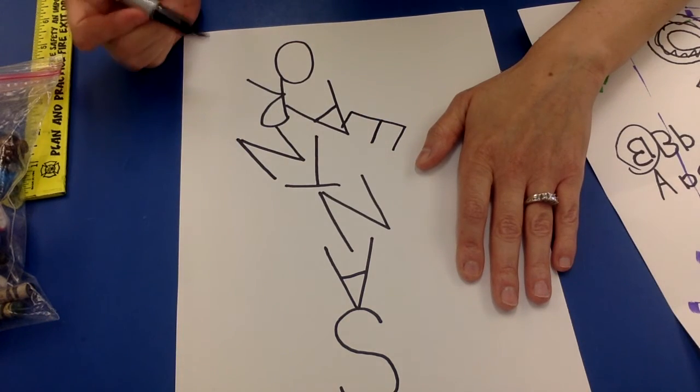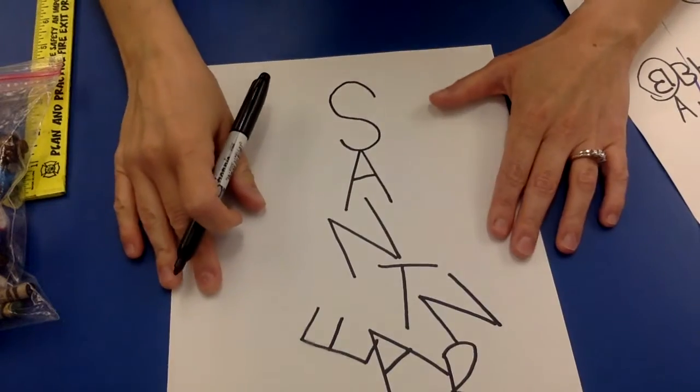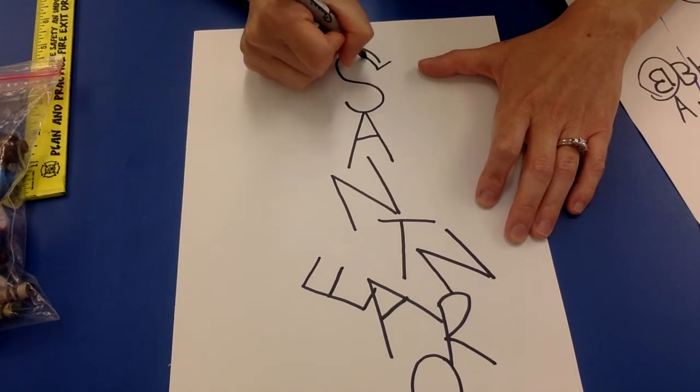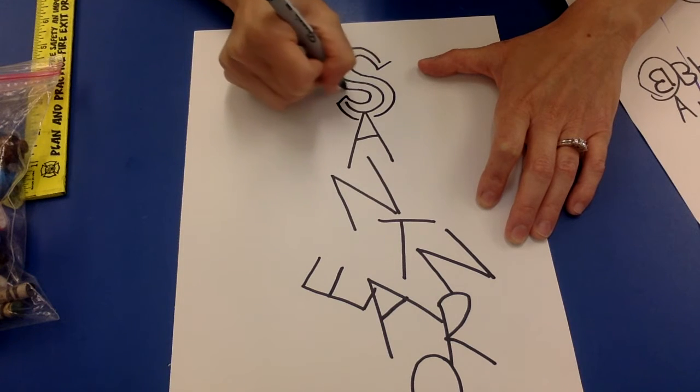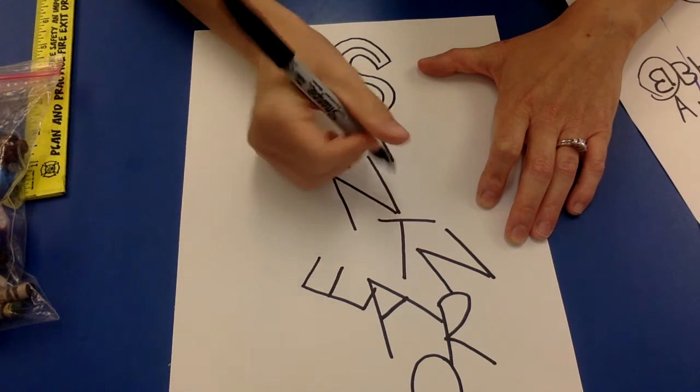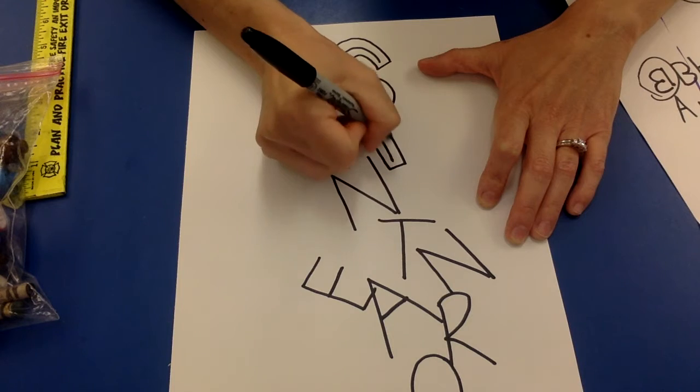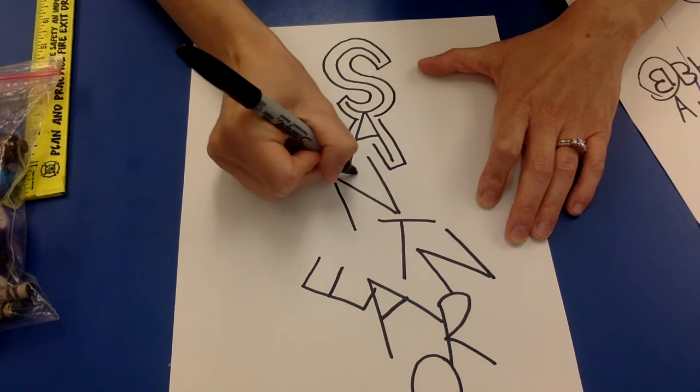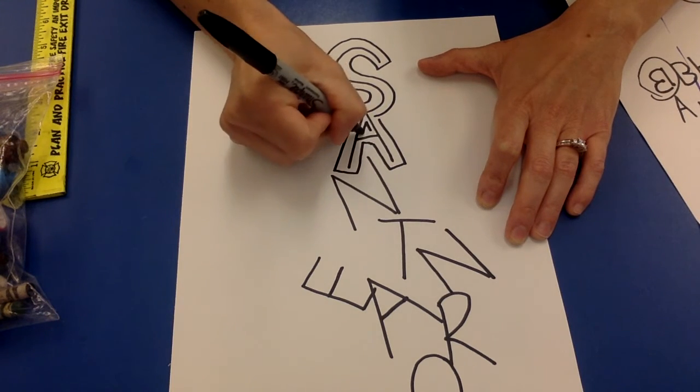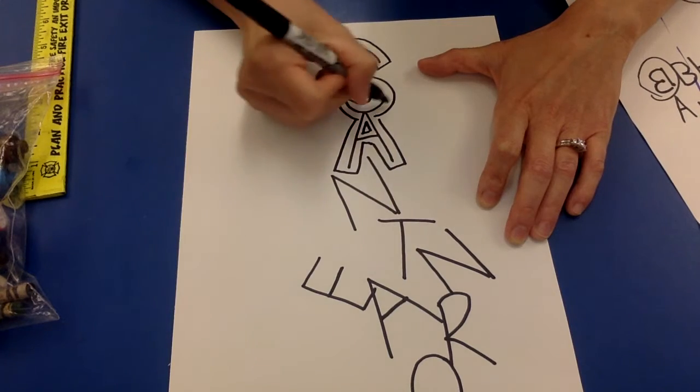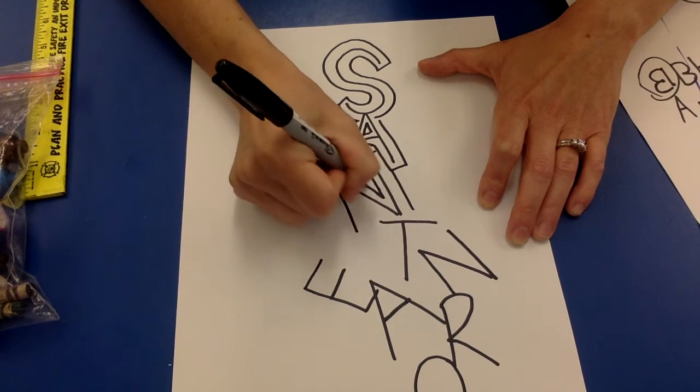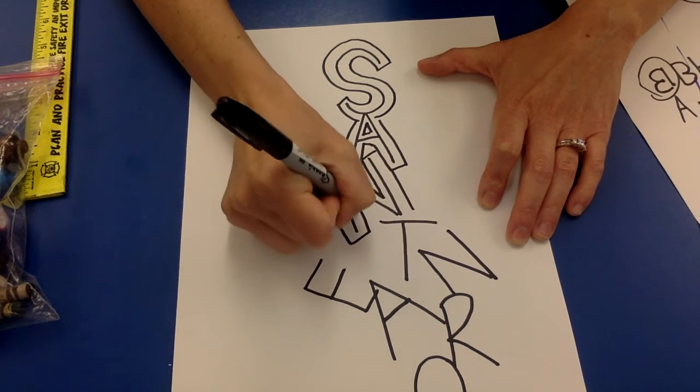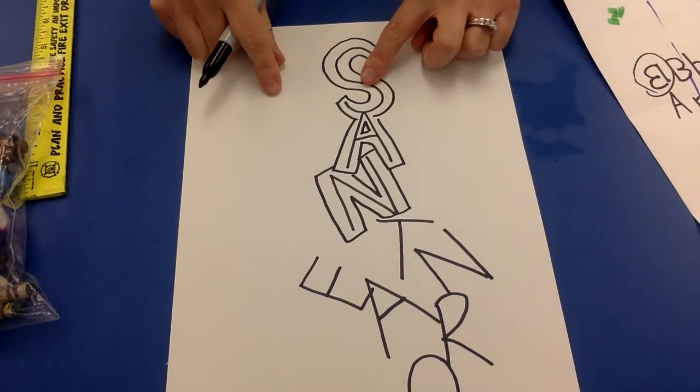When you get done with that, you are going to go around your letters like we practiced and you're going to make them into bubble letters. Notice that my space around my letters, and I erase my original. If I did this in pencil, this is my original. There is a big gap. This is the right way. Let's talk about the wrong way.